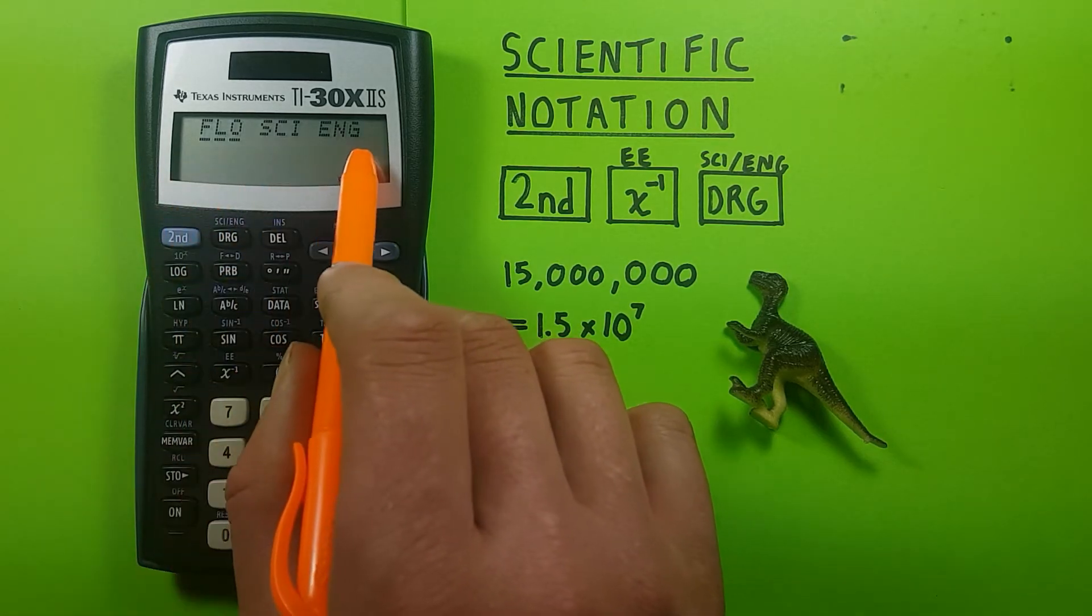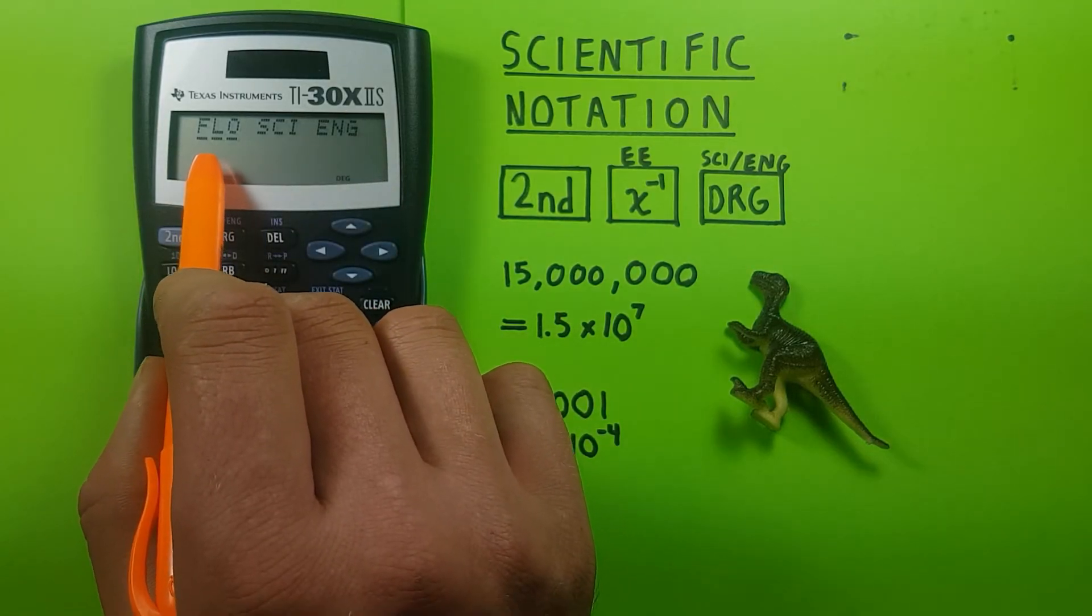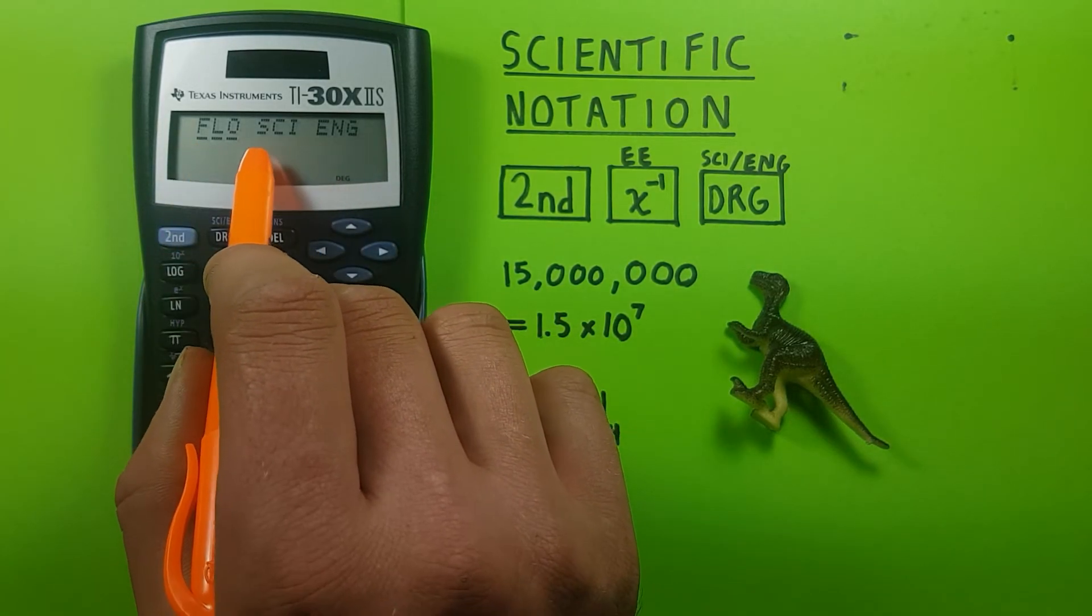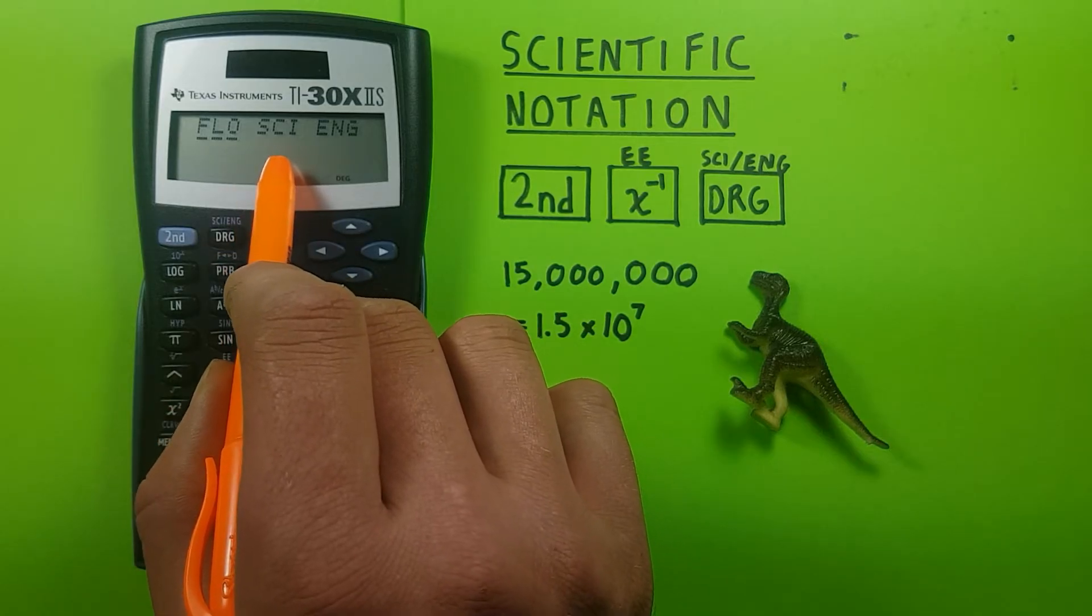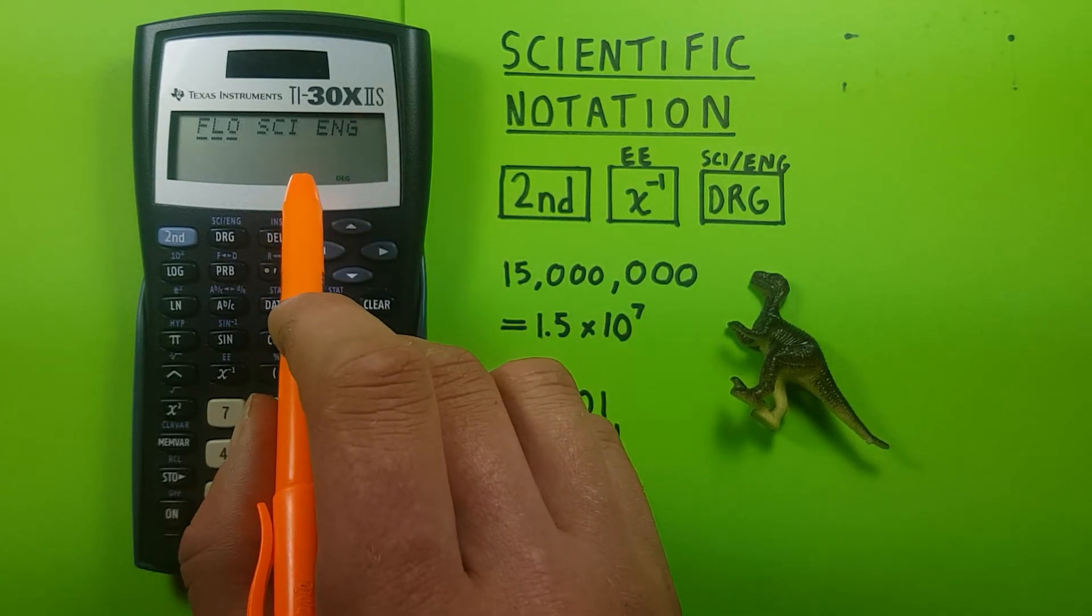This brings up this menu here. We have FLO, or floating notation, or normal notation. SCI, which is scientific notation, which is what we want. And ENG, which is engineering notation, which we aren't worried about right now.